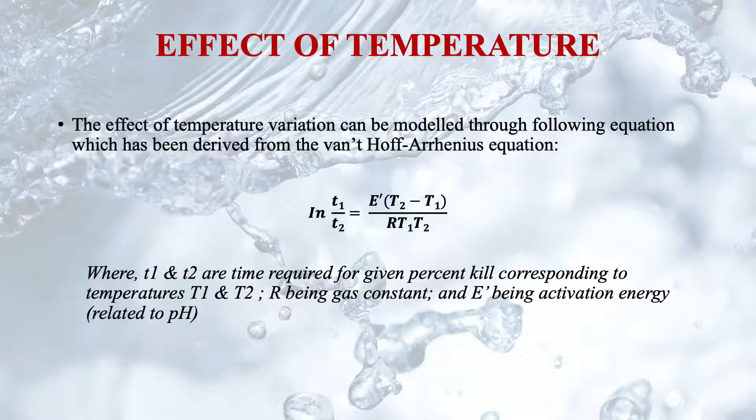The effect of temperature variation can be modeled through an equation derived from the Arrhenius equation. In this equation, t₁ and t₂ are the times required for a given percent kill corresponding to temperatures T₁ and T₂ respectively. R is the gas constant and E is the activation energy, which is also related to the pH of water.